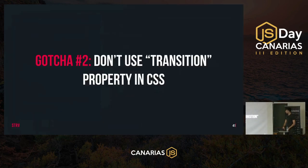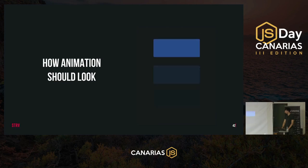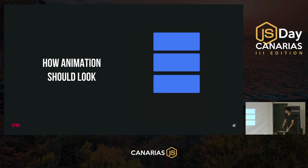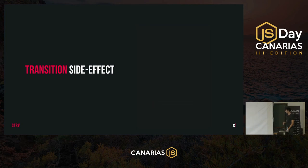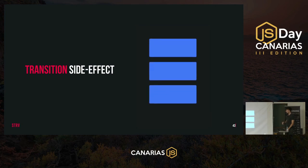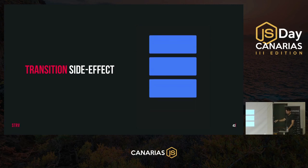The second gotcha is about the CSS transition property — basically make sure you don't use it when you have JavaScript animations. I ran into this problem when switching a component from CSS animations to JavaScript. The animation that was supposed to look one way ended up looking completely wrong, and it took me a long time to figure out I had a leftover transition property in the CSS. So be aware of that.